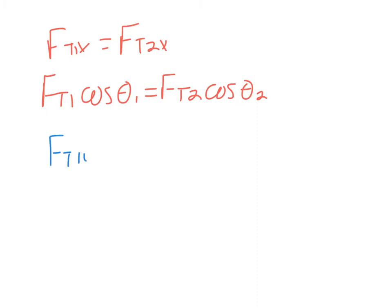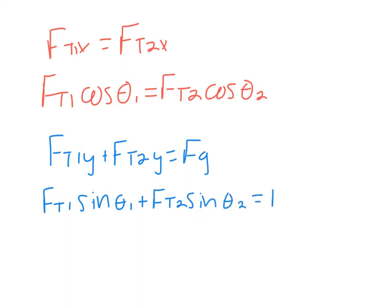I'm going to start by looking at FT1X equaling FT2X and break each of these apart. The X component of any force equals the force times the cosine of the angle. So FT1X equals FT1 cosine theta 1, and FT2X equals FT2 cosine theta 2. Doing the same thing for Y: FT1Y plus FT2Y equals FG. Y component equals the force times the sine of the angle, so FT1 sine theta 1 plus FT2 sine theta 2 equals FG.